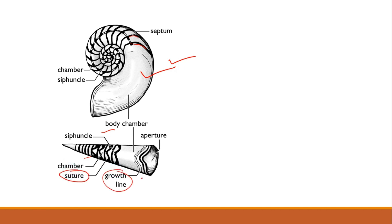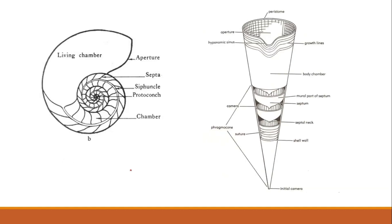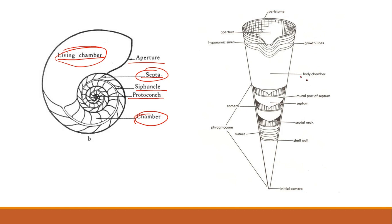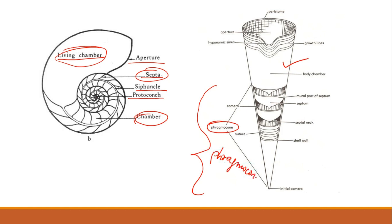Suture and growth lines will be covered in the external morphology section. In summary: the living chamber is where the animal resides, the aperture is the opening, the septa divide the chambers, the siphuncle is a cord-like structure passing through the center of each septum, and the proto-conch is the pointed posterior end. All chambers except the body chamber are together known as the phragmocone.